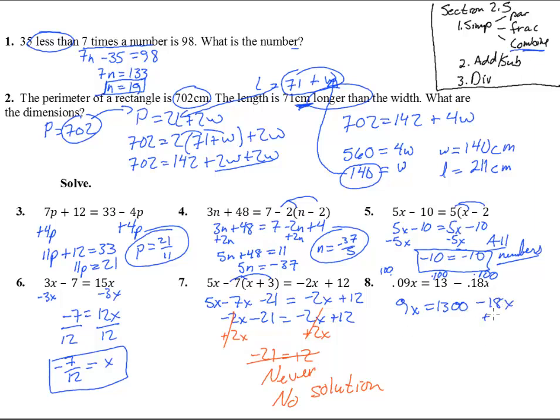Plus 18X. You get 27X equals 1300. Divide by 27, and X then equals, punch that in your calculator, and you get about 48.15. Good.